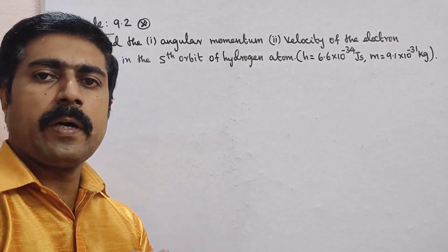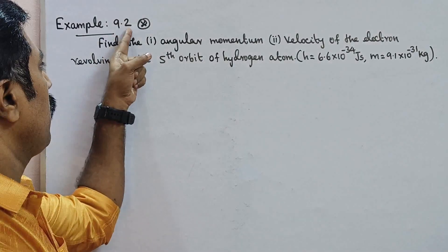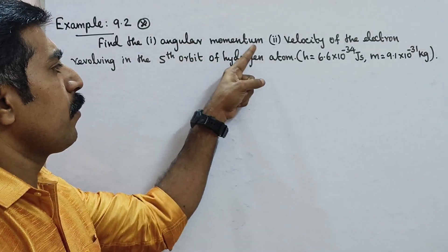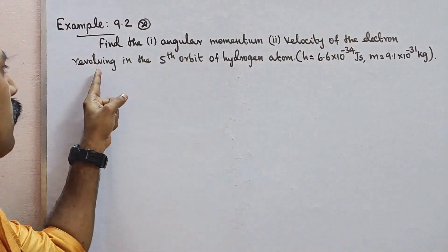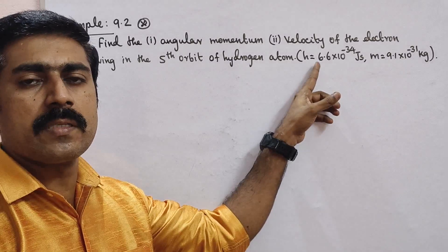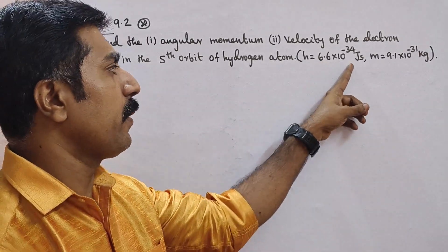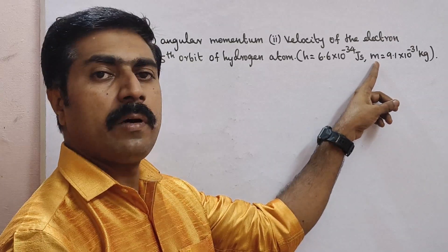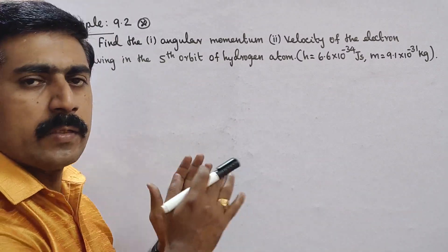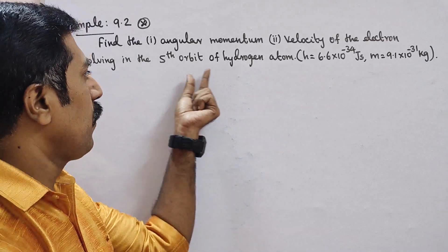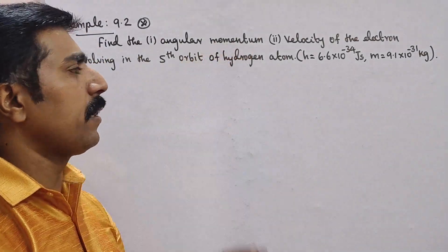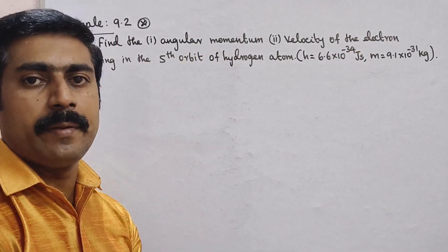Hi students. Example 9.2 - a very important question. Find the angular momentum and velocity of the electron revolving in the 5th orbit of hydrogen atom. Given: H is equal to 6.6×10⁻³⁴ joule-second, mass of an electron 9.1×10⁻³¹ kg. For one hydrogen atom at the 5th orbit, an electron is revolving.